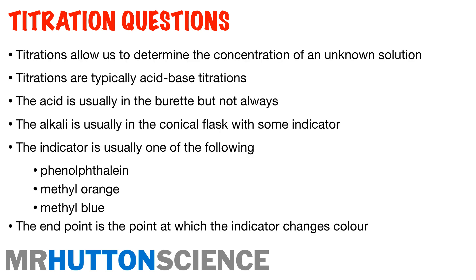Titration questions — there are a few things you're going to need to know. They allow us to determine the concentration of an unknown solution. In a titration question you'll have information about one solution and need to find the concentration of another. Typically these are acid-base titrations. The acid is usually in the burette, but not always — make sure you know which solution is in the burette and which is in the conical flask. The alkali is usually in the conical flask with some indicator added. Indicators you might use include phenolphthalein, methyl orange, and methyl blue. The endpoint is the point at which the indicator changes colour to show that neutralisation has occurred.